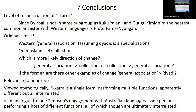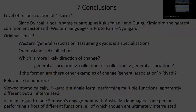You might ask what this has to do with our honoree. Viewed etymologically, I'm claiming that -kara is a single form which performs multiple functions that appear different but are all ultimately related. This is perhaps an analogy to Jane's engagement with Australian languages — she is one person who performs a host of different functions which may seem different but are all ultimately related.